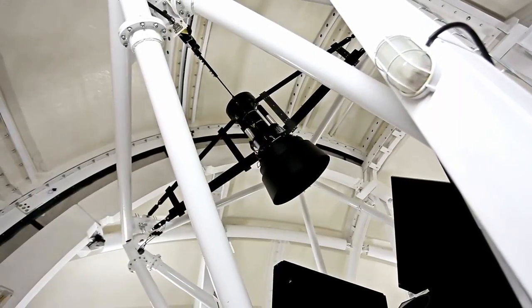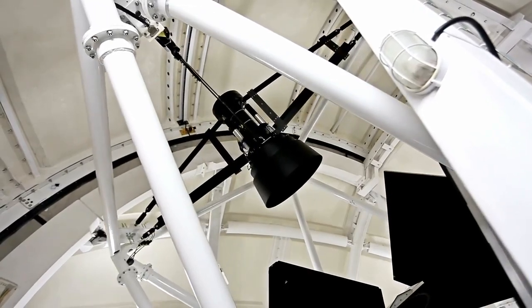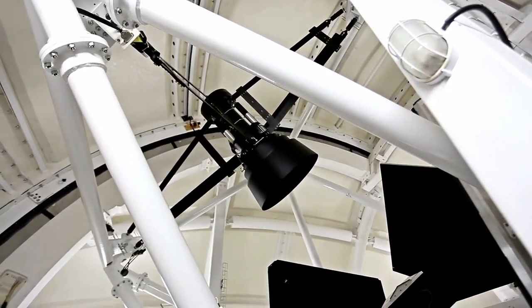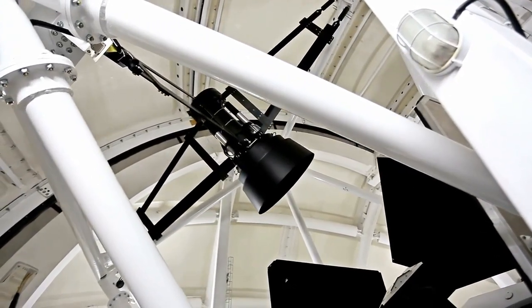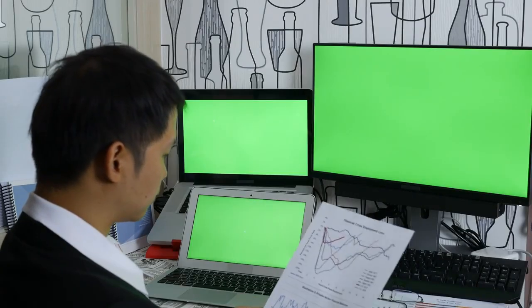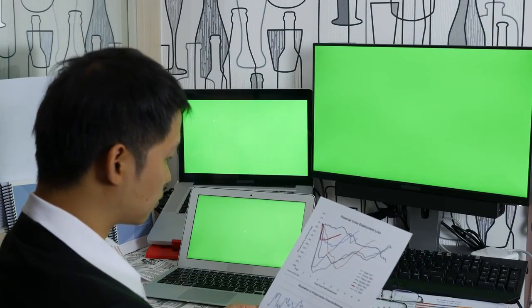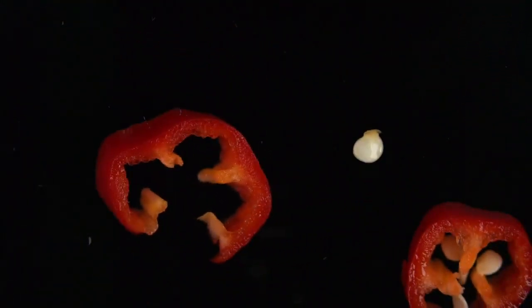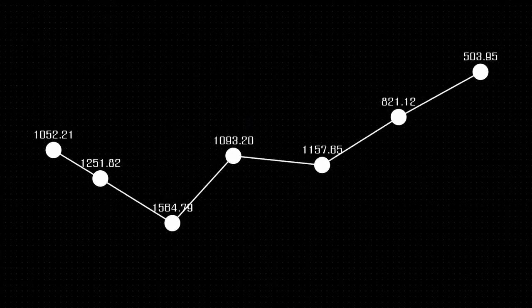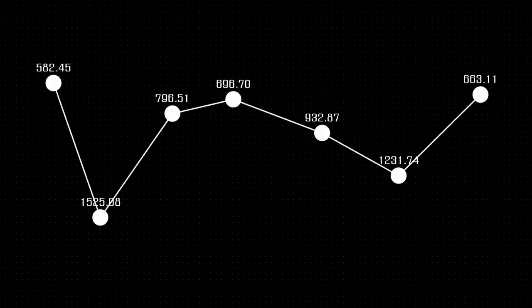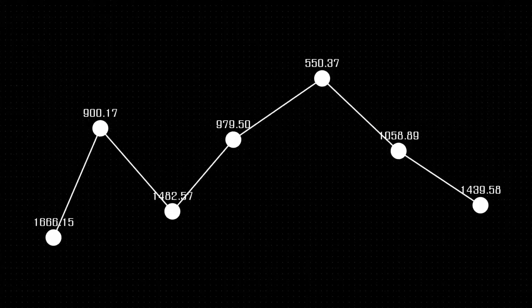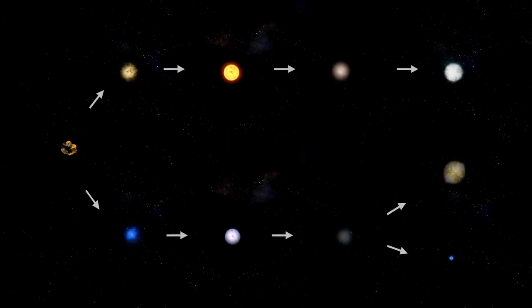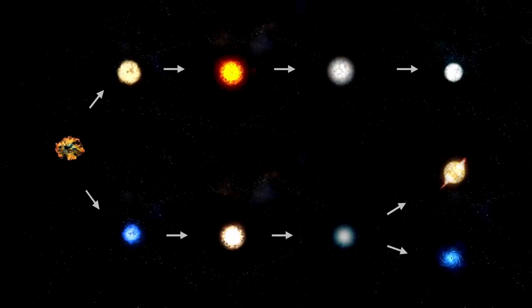One important aspect to consider when studying distant stars like Betelgeuse is the concept of light travel time. Betelgeuse is located roughly 725 light years from Earth, meaning that the light we see from it today began its journey to us around 725 years ago. Therefore, any change we observe now actually occurred in the distant past. This time lag complicates efforts to monitor and interpret Betelgeuse's behavior,